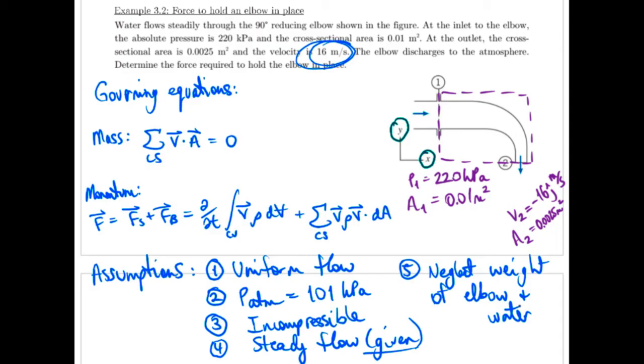So most of those are given or obvious or we've discussed previously except for number five. So I'll just quickly go over neglecting the weight of the elbow and water. I mean in this case we haven't been given enough information to solve it so we basically have no choice but to neglect the weight.